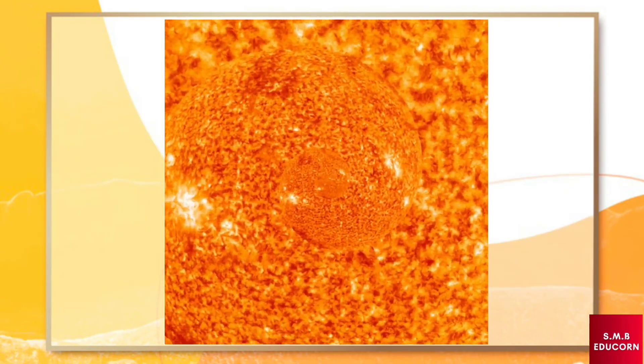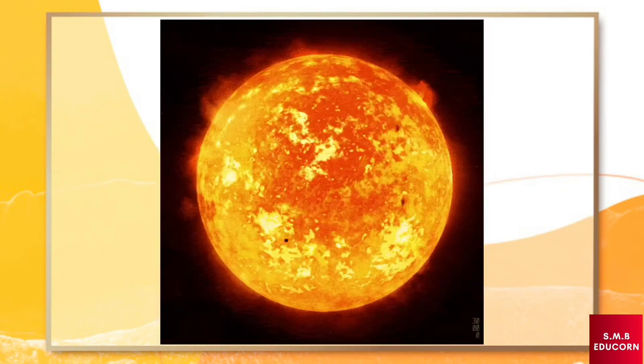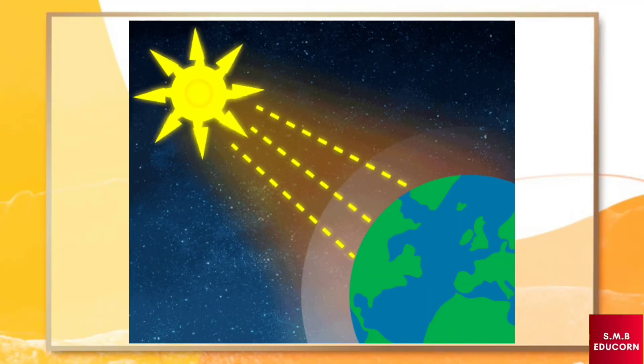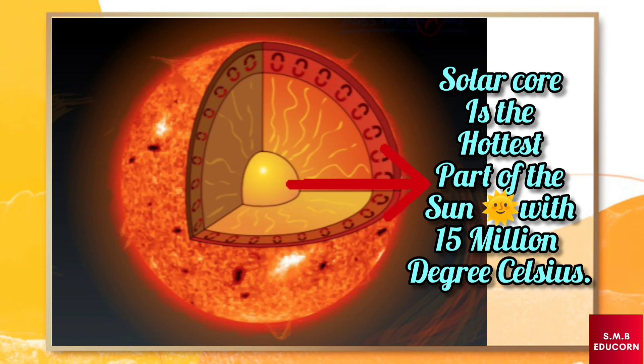This reaction release a lot of energy and it start to move outward as light and heat, which we receive on Earth. So, we can say that the solar core is the hottest part of the sun with a temperature of 15 million degree Celsius.